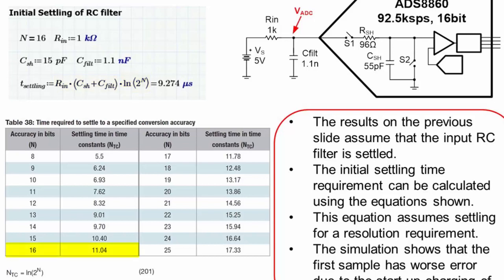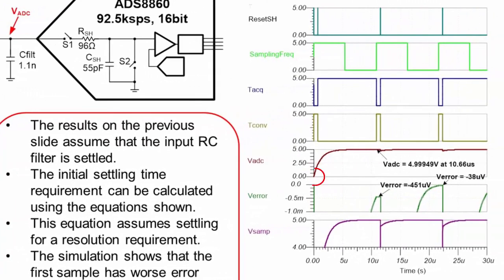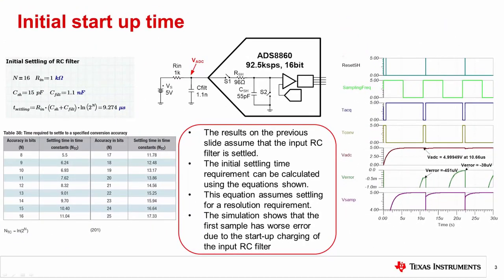For a 16-bit converter, the initial charge-up time for one LSB of error is calculated by multiplying 11.04 from the table or using the equation. Looking at the simulation for this example, you can see that VADC is initially zero and charges exponentially after the power is applied. You can also see that the first conversion has worse error than subsequent conversions. The main point here is to make sure that the initial system power-up time is accounted for. This can be done by adding a short delay before taking measurements or accepting the error introduced by this startup behavior.